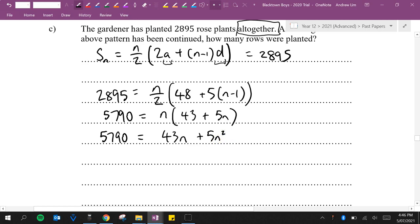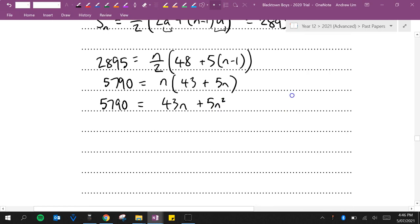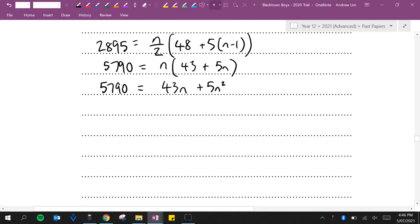Then I'm going to move everything to one side and make it equal to 0. Make it a quadratic and then we can solve that. So N squared is already positive. I'm going to move the 5,790 to the other side. So I have 5N squared plus 43N minus 5,790 is equal to 0.